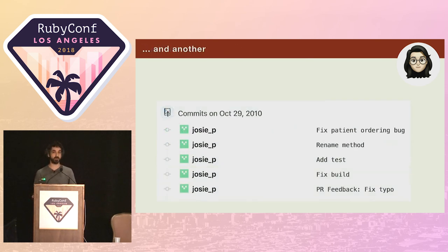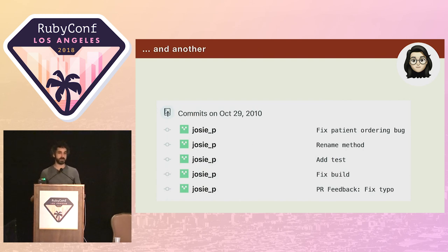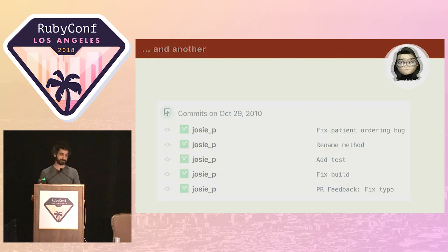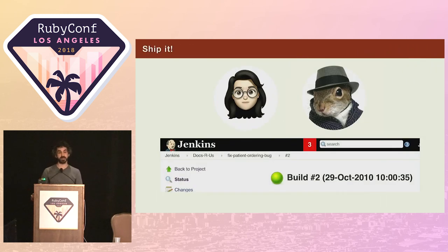So she adds an additional commit to fix the test, and then another when a coworker points out a typo. Normally her coworker would have pulled her up on such a messy commit history, but having seen the unhappy state she was in that morning, perhaps they thought it would be kinder to let it slide this time. With the build green, the PR is approved, and the bug fix is shipped, just in time for the big demo.